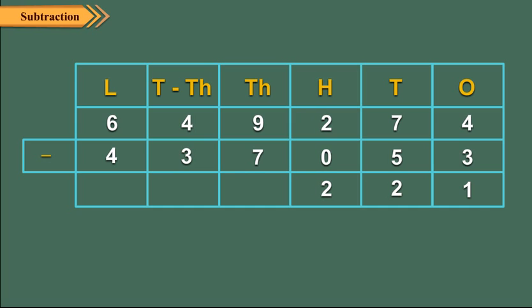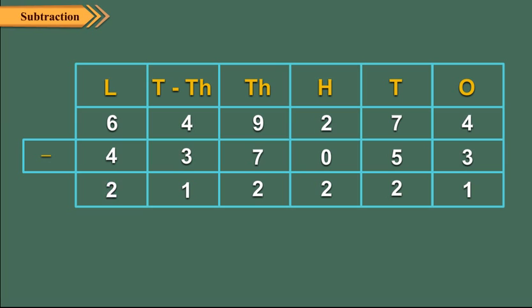Subtract the thousands: 9 thousands minus 7 thousands is equal to 2 thousands. So write 2 in the thousands column. Subtract ten thousands: 4 ten thousands minus 3 ten thousands is equal to 1 ten thousand. So write 1 in the ten thousands column. Finally, subtract lakhs: 6 lakhs minus 4 lakhs is equal to 2 lakhs. So write 2 in the lakhs column. Thus the difference of 649274 and 437053 is 212221.